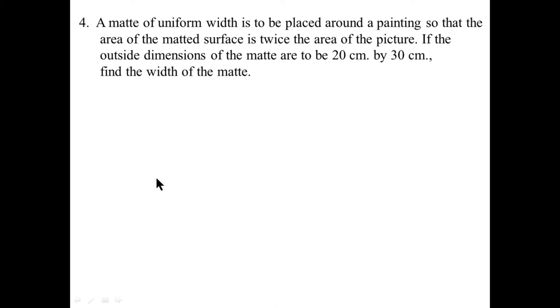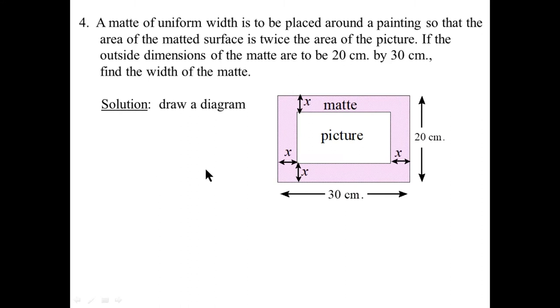A final example: a mat of uniform width is to be placed around a painting, so that the area of the matted surface is twice the area of the picture. If the outside dimensions of the mat are 20 by 30, find the width of the mat. Solution: draw a diagram. Here we have a picture surrounded by a mat of uniform width x — it's x along each side — and the entire thing is 20 by 30.